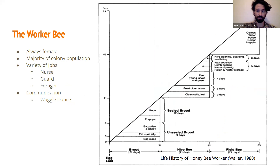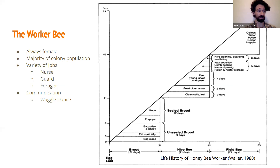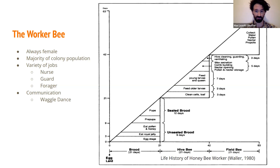A worker bee is always female, and a drone will always be male. Workers have a variety of jobs, and what designates the job they do is their age. From the time an egg is laid to the time of emergence takes approximately 21 days. When a worker first emerges, they spend the first half of their life as a nurse bee, responsible for taking care of developing bees and the queen. Then as the worker ages, they take on more responsibilities — guarding the hive entrance, maintaining colony ventilation, building comb, and storing pollen and nectar.